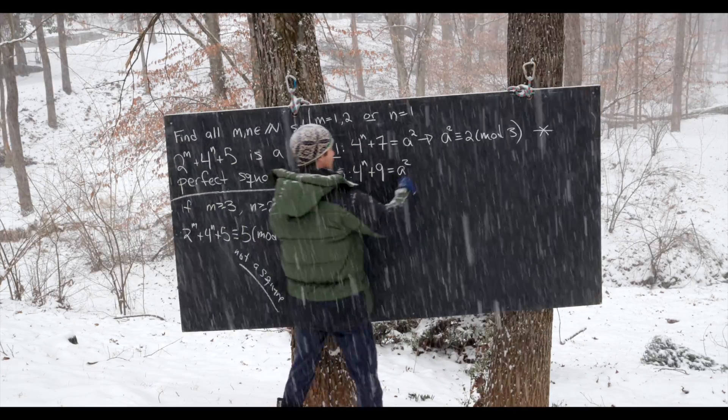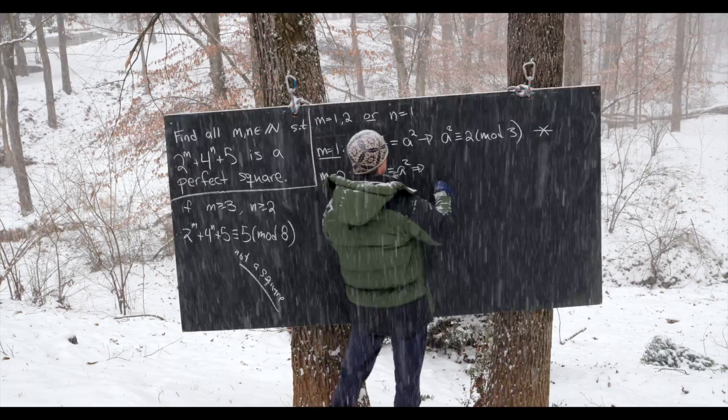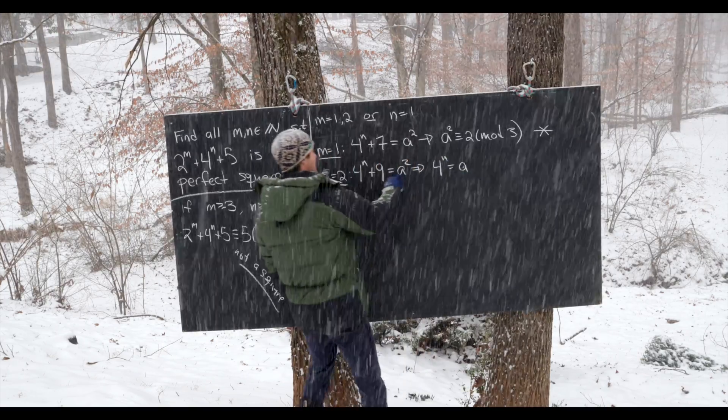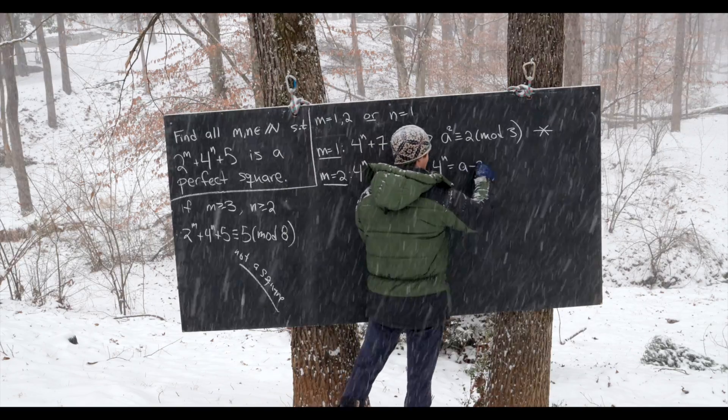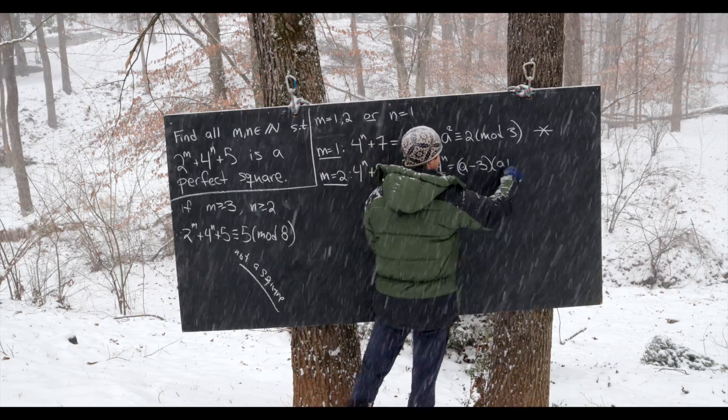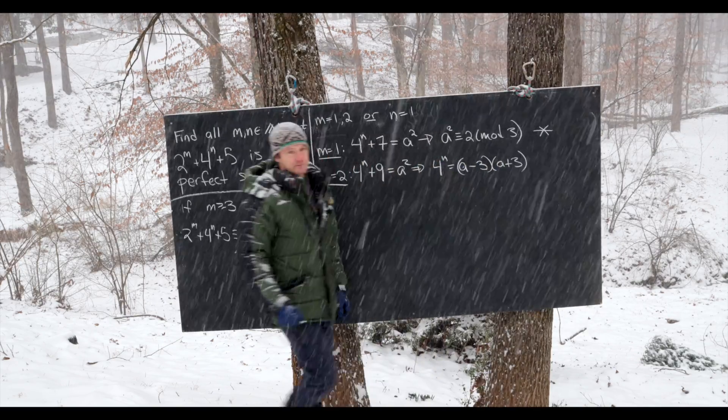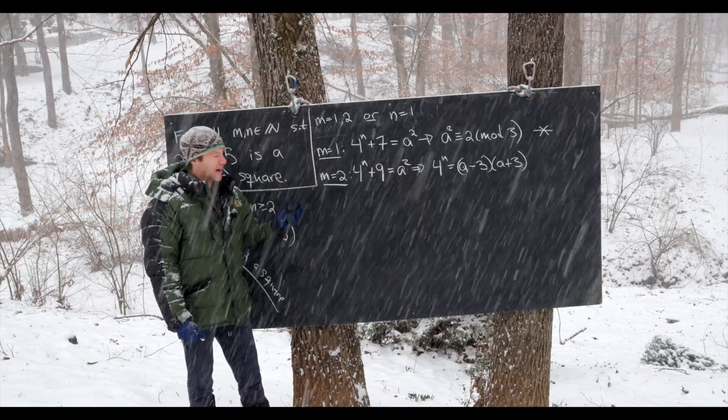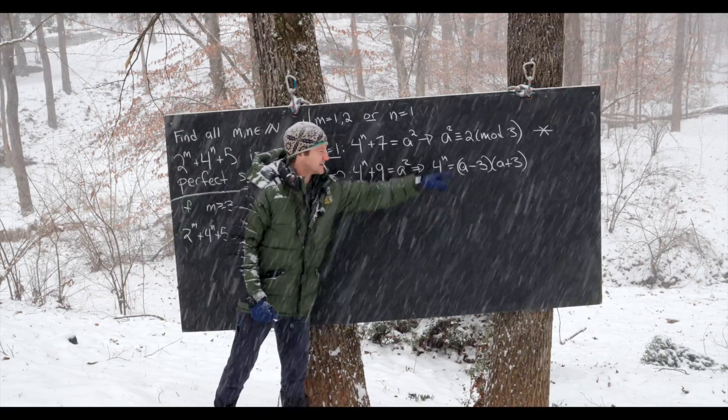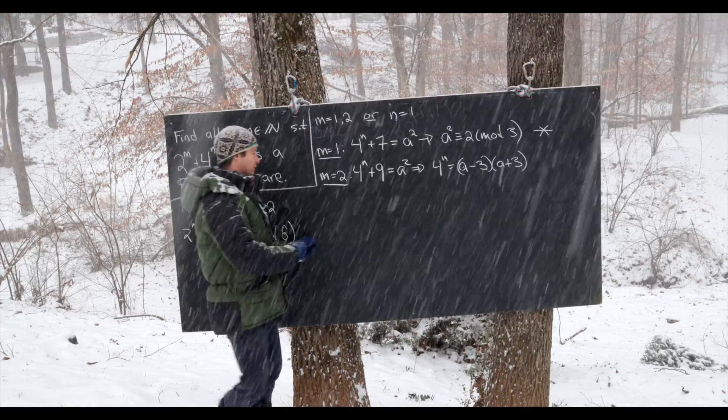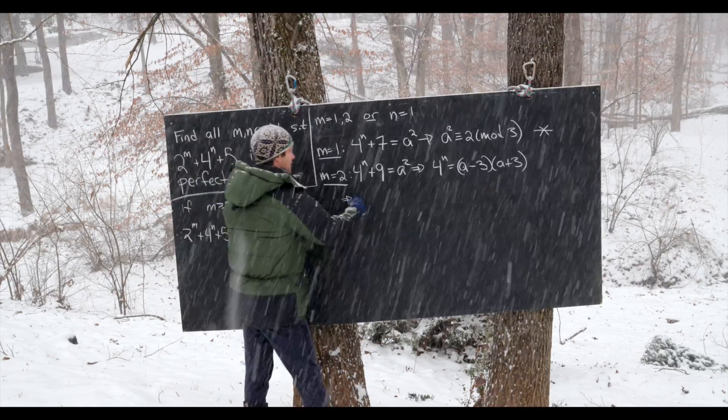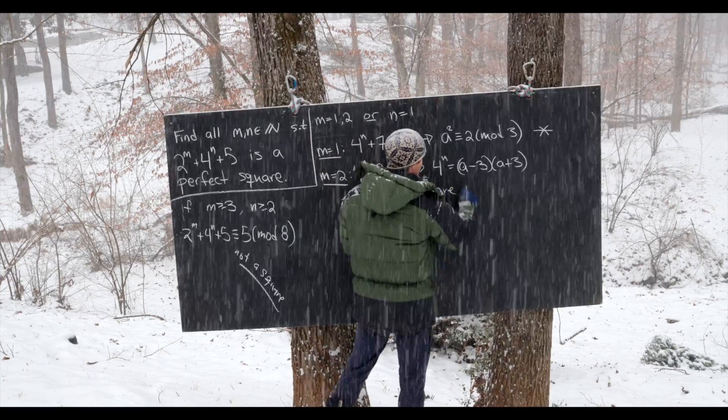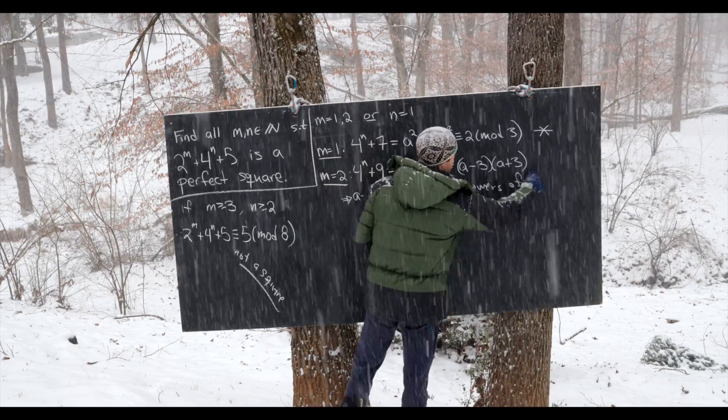But let's notice that we can reduce this really quickly to 4 to the n is equal to a squared minus 9, which we can factor as a minus 3 times a plus 3. But now let's notice that 4 to the n is a power of 2. That means the right hand side is also a power of 2. In particular, a minus 3 and a plus 3 are powers of 2.